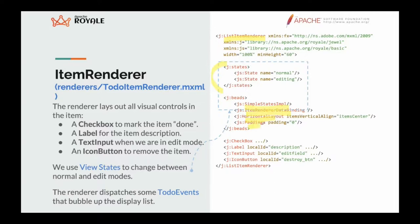We'll also remove the default padding because the padding defined in the item renderer is 8 pixels but we want 0. The item renderer contains a checkbox, a label, a text input for editing, and an icon button for destroying the item. The checkbox will be restyled to be green and bigger, the label shows the text, and the icon button allows deletion.